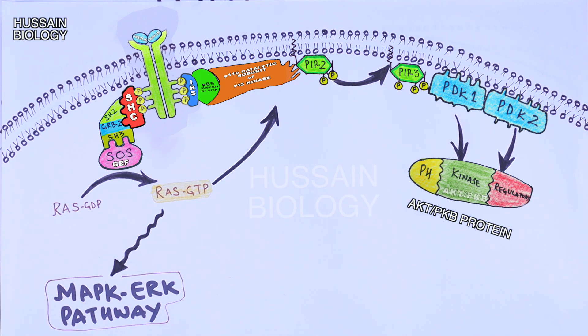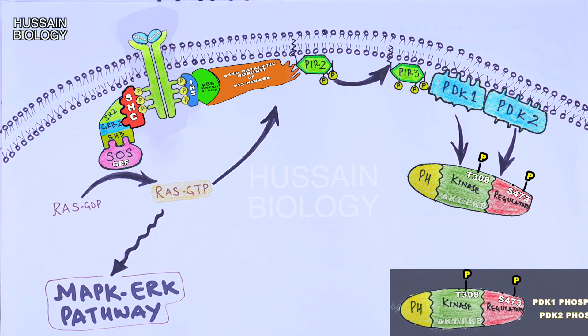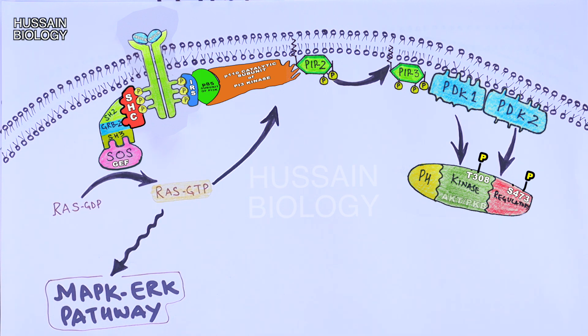We can see in the structure of AKT protein or PKB protein it has got PH domain, kinase domain, and regulatory domain. First of all the PDK1 phosphorylates the AKT or PKB at threonine 308, whereas PDK2 phosphorylates regulatory domain of AKT at serine 473. The phosphorylation at these sites enables the activation of AKT or PKB protein.